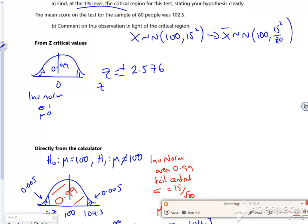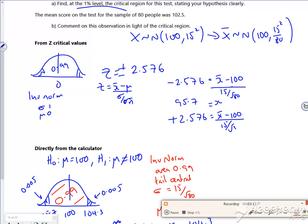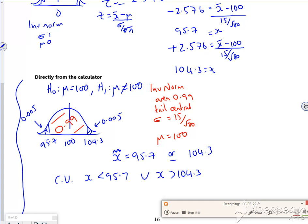That gives me a z-value out as plus or minus 2.576. So then I have to do the z equals x minus mu over sigma over root n. For both sides, so I'd have minus 2.576 is x-bar minus 100 over 15 over root 80. So that would give me the x-bar value out of 95.7, and then for plus 2.576, I'd use the x-bar minus 100. It's just so messy. Why would you? This is from when we didn't have the possibility of doing it in the calculator. It is so much easier to do it this way.